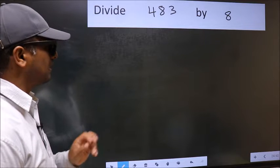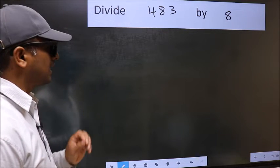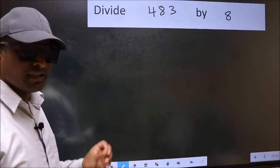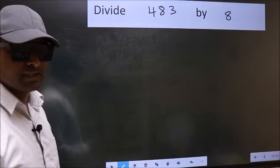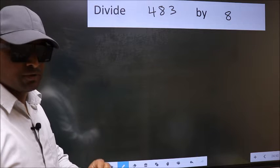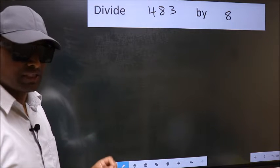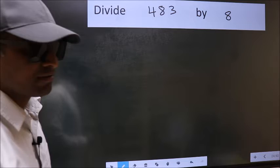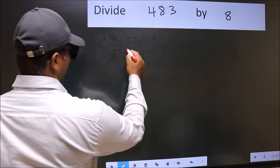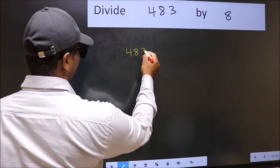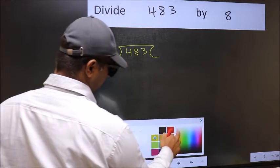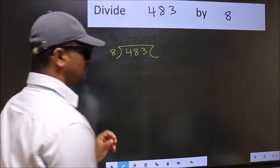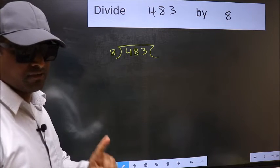Divide 483 by 8. While doing this division, many do this mistake. What is the mistake that they do? I will let you know. But before that, we should frame it in this way. Okay. 483 and 8 here. This is your step 1.